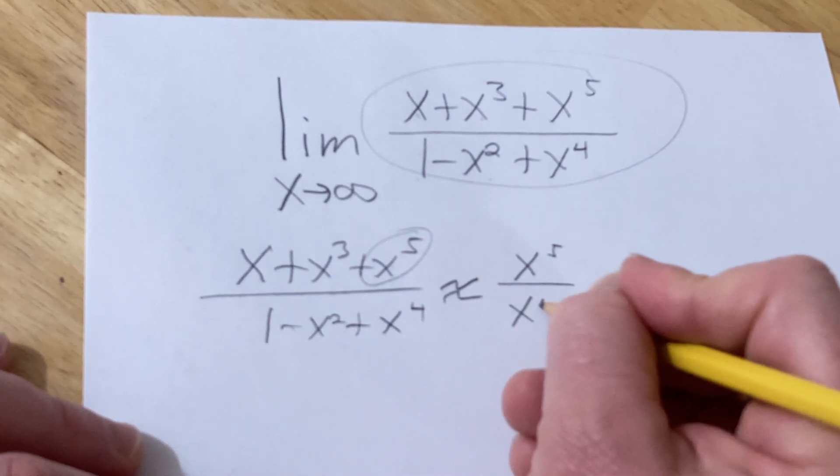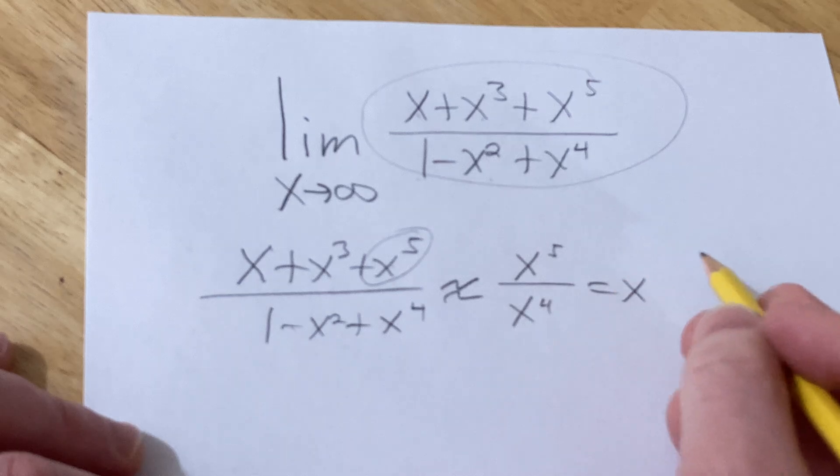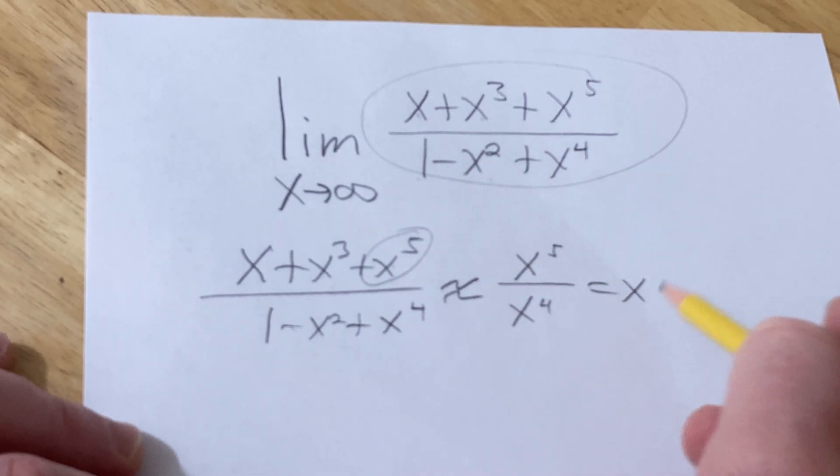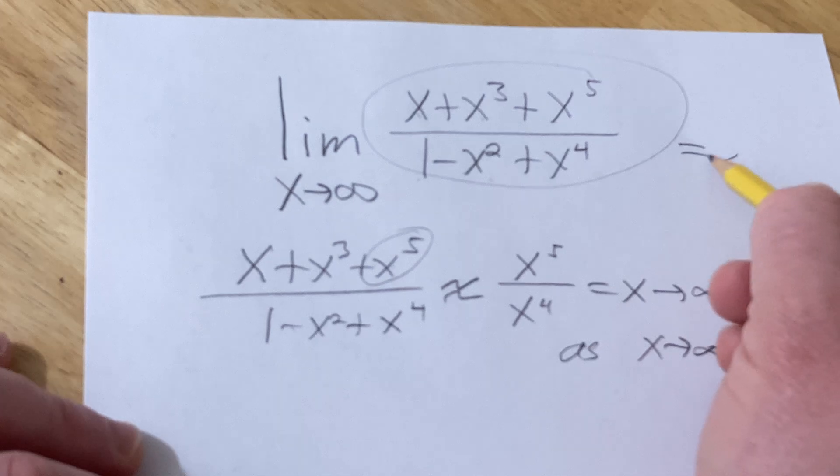You can ignore these x to the fourth. So for big values of x, this is approximately equal to x. So this approaches infinity as x approaches infinity. Therefore, the answer is infinity.